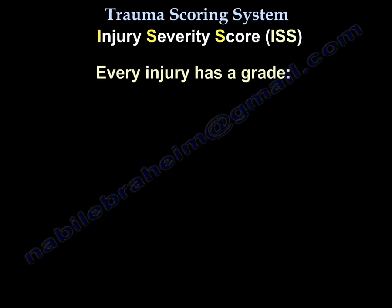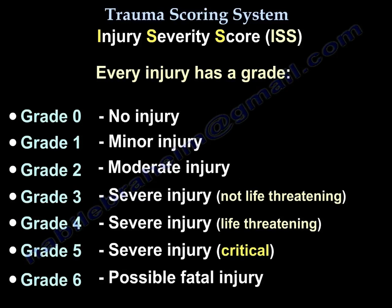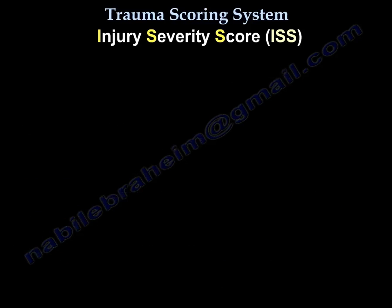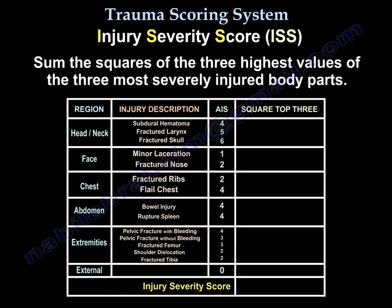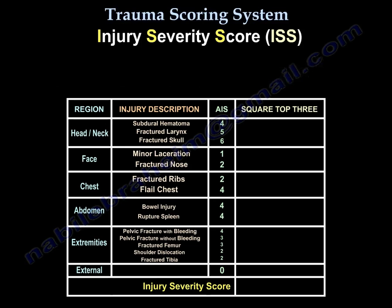Every injury has a grade. No injury gets zero, minor gets one, moderate gets two, severe like a fracture femur gets three but it's not life-threatening. Four is severe and life-threatening, survival is probable. Five is severe, the patient is critical, survival is uncertain. Six is the maximum score and is possibly fatal. The ISS is the sum of the square of A, B, and C — the three most severely injured body parts.